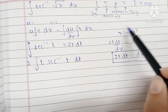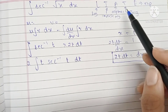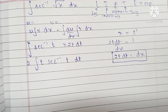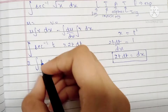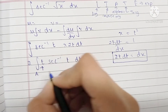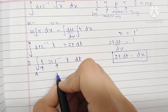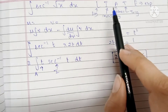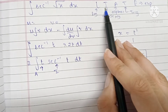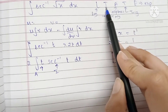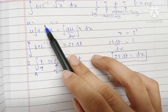The LIATE rule helps us decide which term to place as u and which to place as v, based on which is easier to integrate and which is easier to differentiate. Here our two terms are the algebraic term t and the inverse trigonometric term sec⁻¹(t). Since inverse trigonometric comes before algebraic in LIATE, the inverse trig term is placed as u.